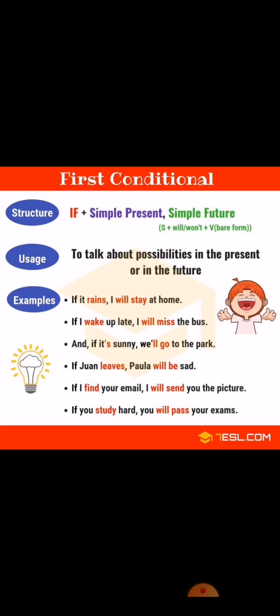Now look at the structure and usage. The first conditional is used to talk about possibilities in the present and in the future — that is, whether something can happen or not. There will be a condition, and if that condition is fulfilled, the result will follow.